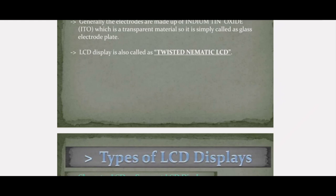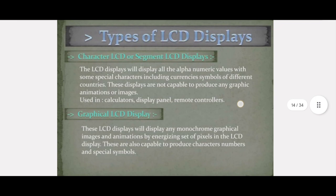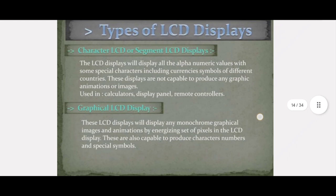This is the basic construction and working of LCD. Let us see about the types of LCD. The first type is character LCD or segment LCD display. This type of LCD will display only alphanumeric values with some special characters like currency symbols — rupees, euros, etc. These LCD displays are used in calculators, display panels, remote controllers, and similar devices.